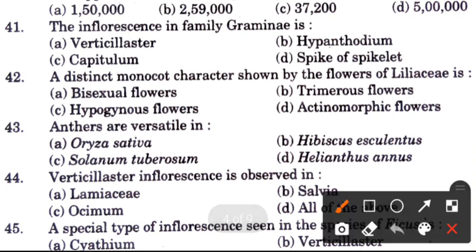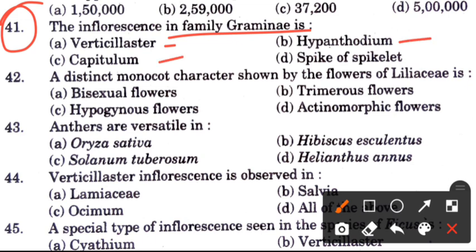Question 41: What is the inflorescence in family Gramineae? Options are verticillaster, hypanthodium, capitulum, and spike of spikelet. The answer is D, spike of spikelet, because spikelet type inflorescence is present in this family.